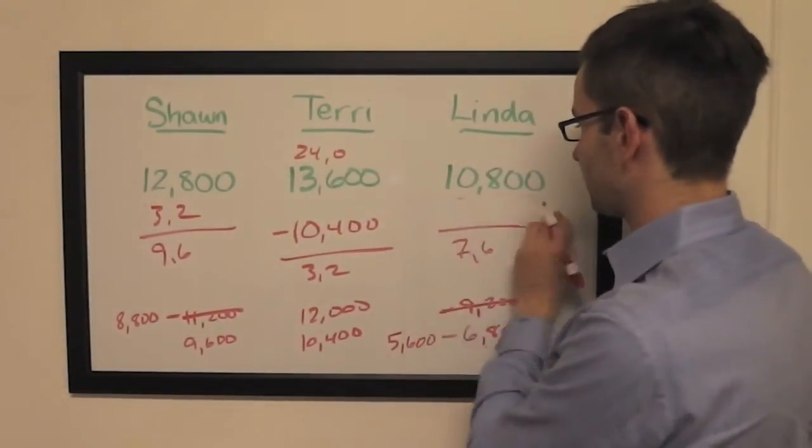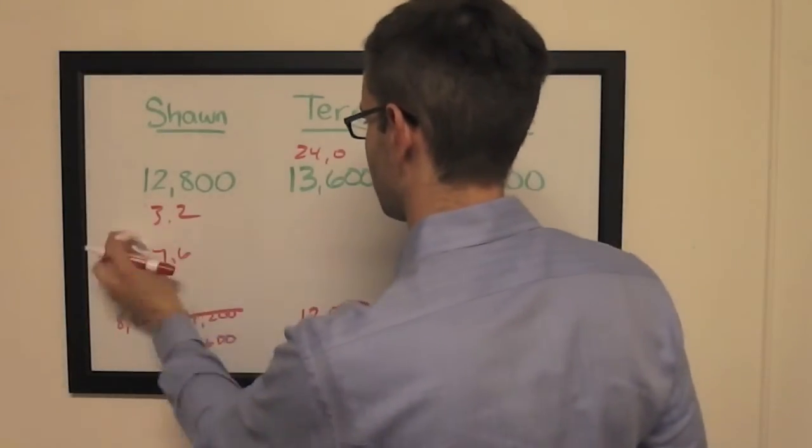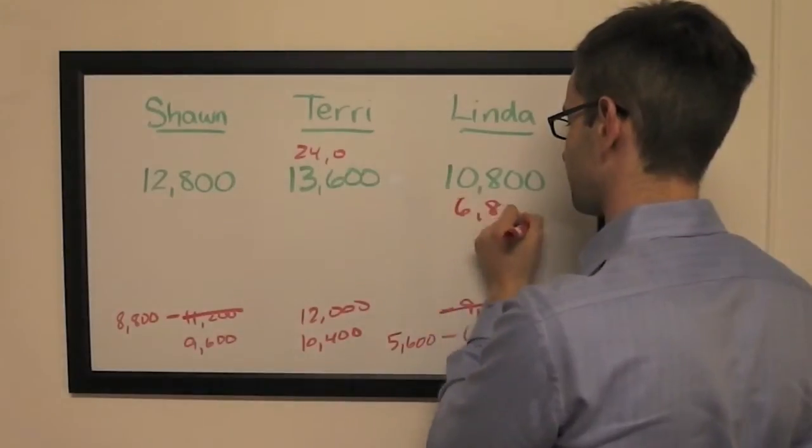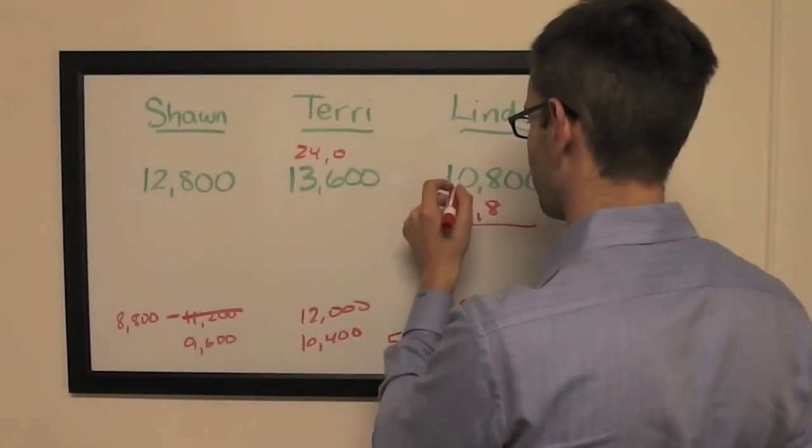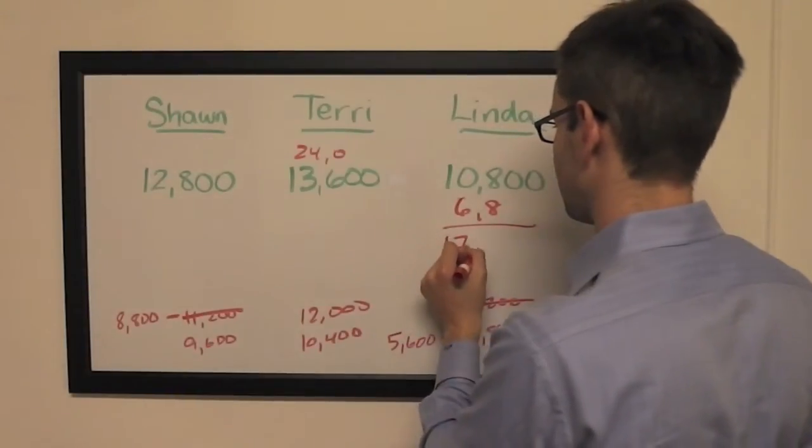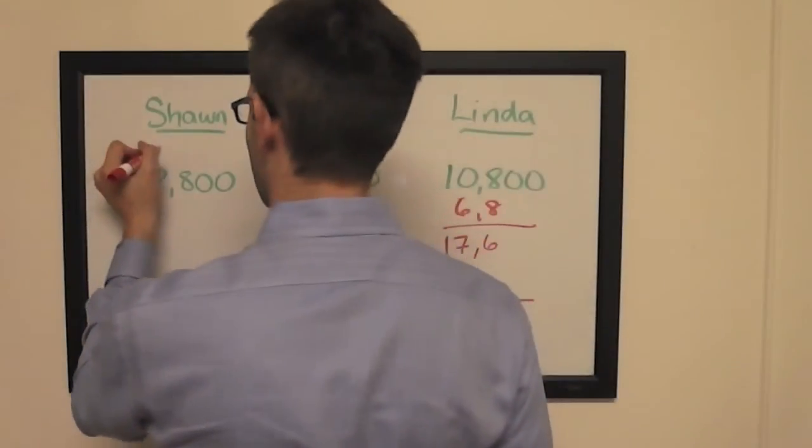As for Linda's $6,800, let's see what that will do to Shawn's range. She's right with $6,800. That will give her $1,700, so to cover that.